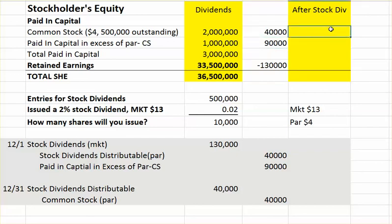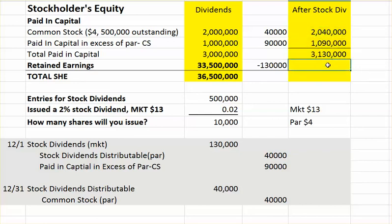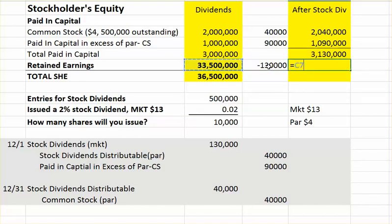After the stock dividend, this is what your equity accounts are going to look like. Your common stock account actually increases because you've given away more common stock. Additional paid-in capital in excess of par is also going to increase because the market value of what you gave away was more than your par value for common stock. So your total paid-in capital is now $3,130,000 — it went up by $130,000. Retained earnings is going to go down by that same amount: $33,500,000 minus $130,000 equals $33,370,000.